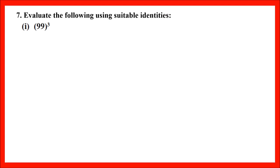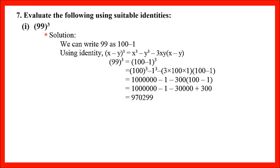Question number 7: Evaluate the following using suitable identities. In this question we also need to use identities. Part 1: 99³. We need to write 99 in identity form. So 99 = 100 − 1, and we will use identity number 7.